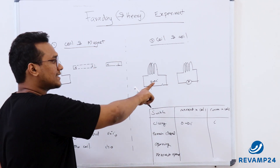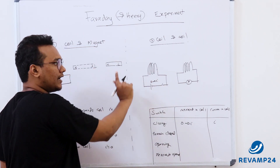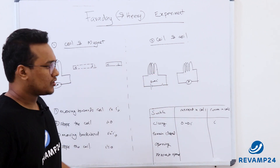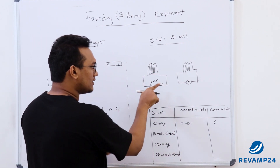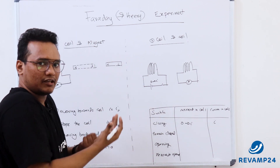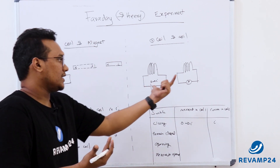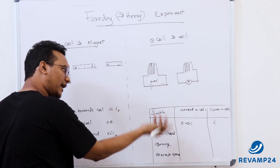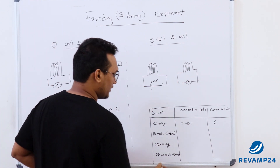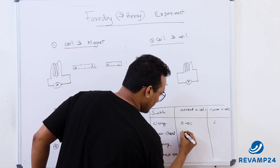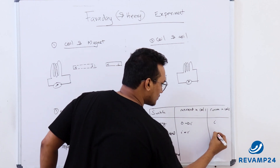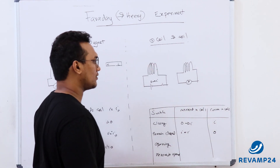He kept the circuit closed. As soon as the switch was closed, current rose from 0 to i and he got a deflection. But once it remained closed with steady current, there was no measurement — no current in the second coil. So with i remaining constant, coil 2 showed no current.